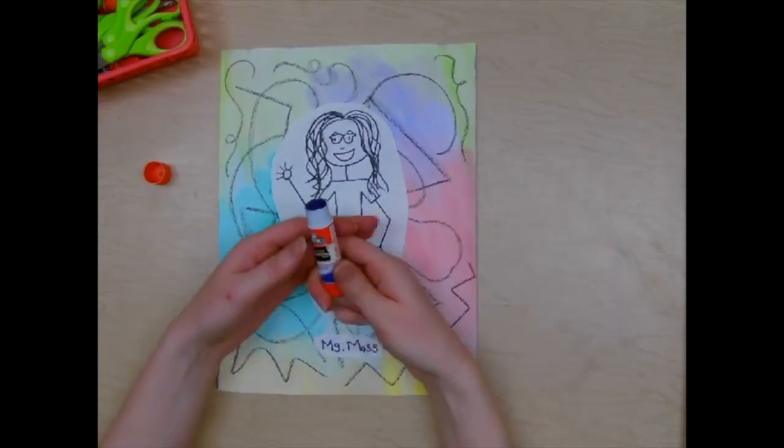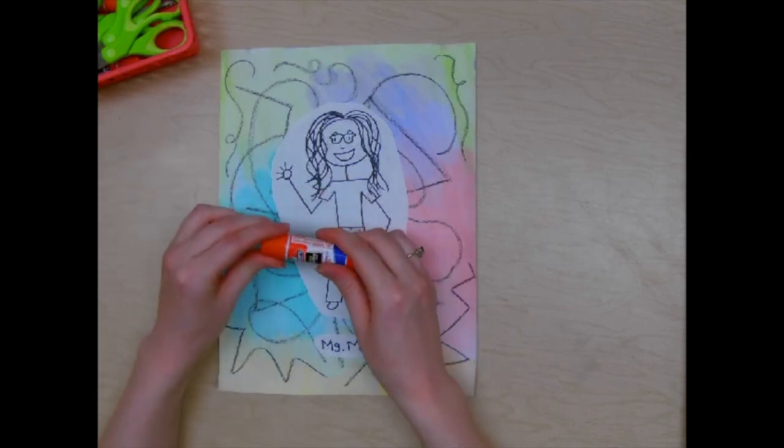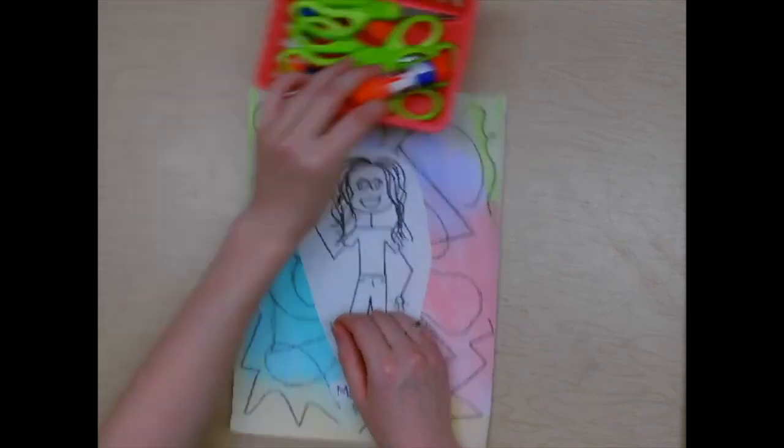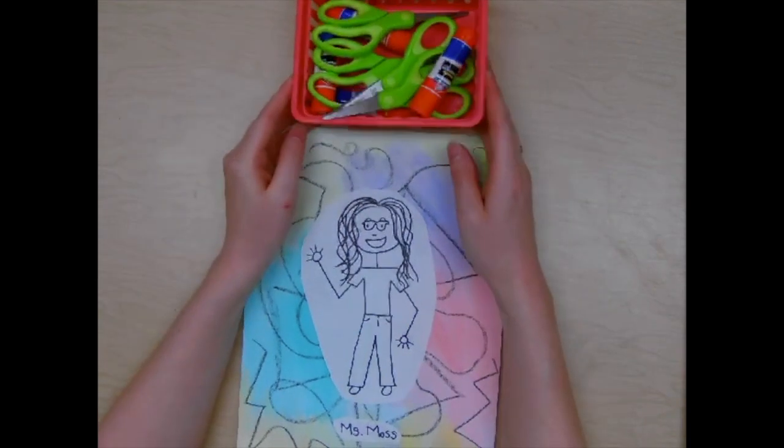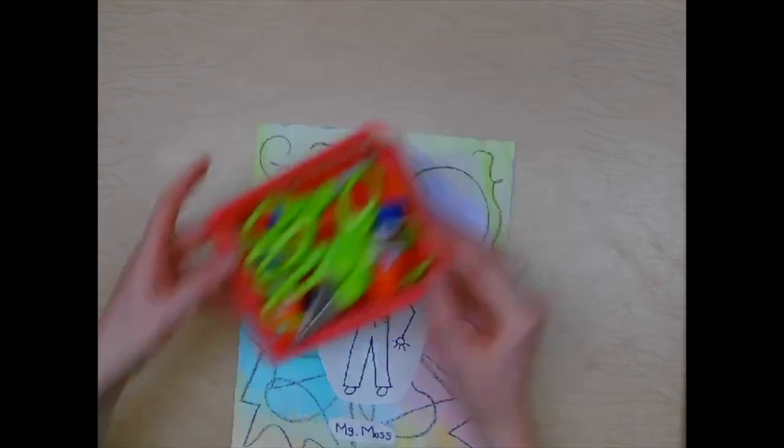And glue it down. When you're done, make sure you've turned down the glue stick and put the cap back on till it clicks. Then put the glue away in the basket. And the person sitting in seat number one can bring you back the basket of scissors and glue.